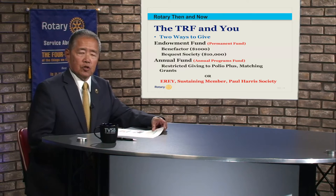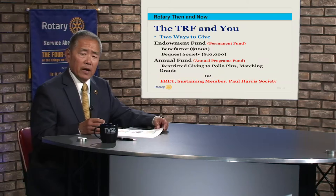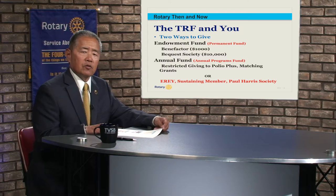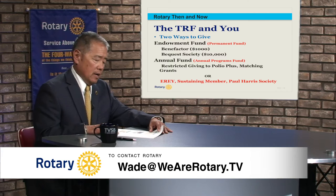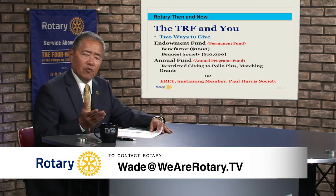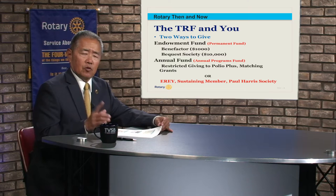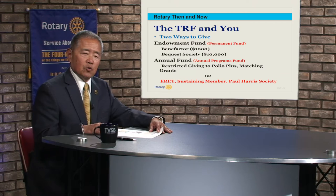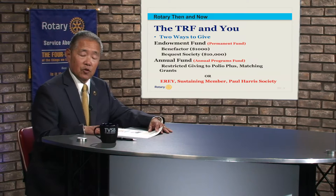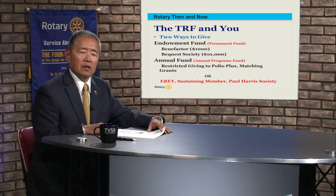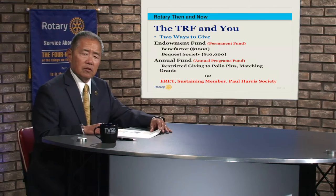The annual fund is the cash contributions component. Cash contributions can be given restricted — to Polio Plus, a district grant, a global grant, a scholarship — or given directly to what we call the World Fund, a share program where the Rotary Foundation directs money where it's needed. Rotary has a contribution level of $1,000 at which you are recognized as a Paul Harris Fellow. There is also an Arch Klump Fellow, given to an individual who has contributed $250,000 in cash — and we have quite a few of those in our district.